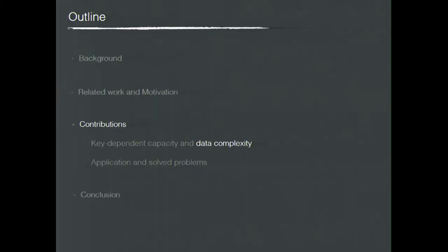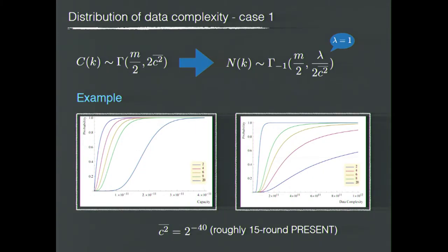With the distribution of the capacity, we can study more about the data complexity. Since we already know the capacity follows a gamma distribution, the data complexity can be formally derived into an inverse gamma distribution with corresponding parameters. Here, lambda is a constant for any given success probability in an attack, so for easier explanation we take lambda as 1.